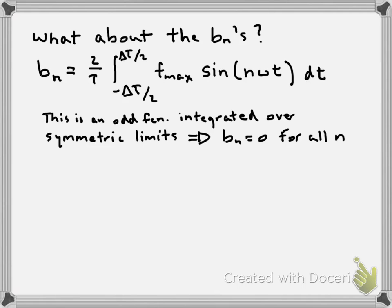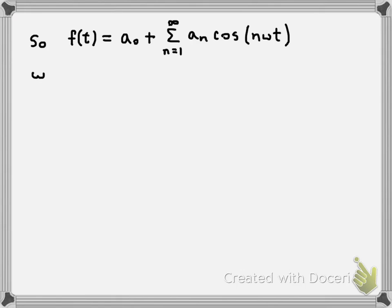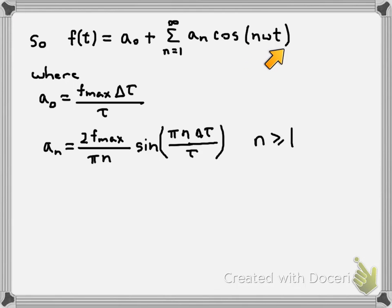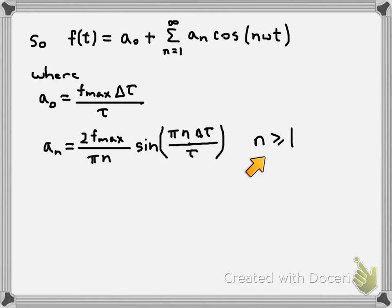So all b's equal zero. We found a_0 and all a_n's, giving us the complete Fourier series: f(t) = a_0 + sum from n=1 to infinity of a_n cosine(nωt), where a_0 = f_max · δτ/τ and a_n = (2f_max / πn) × sine(πn · δτ/τ) for n ≥ 1.